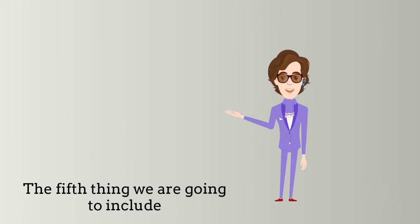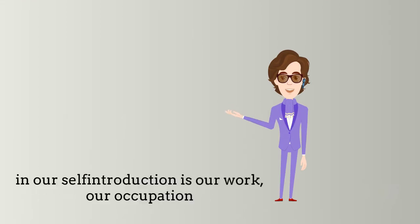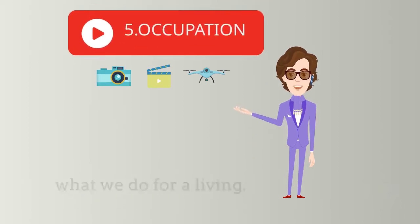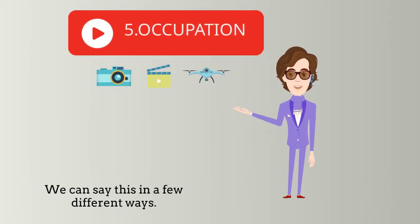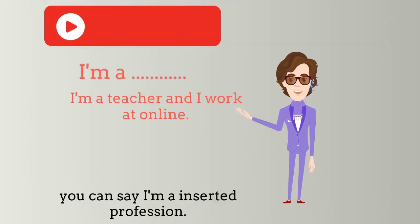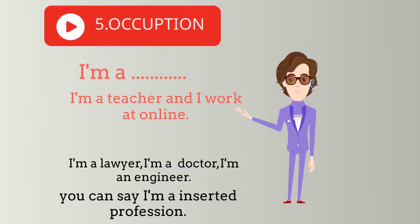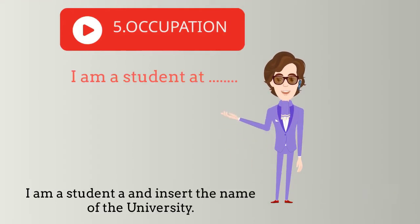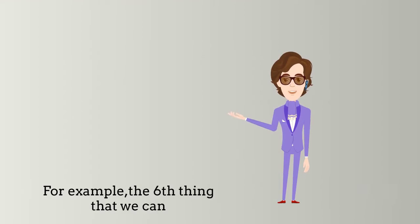The fifth thing we are going to include in our self-introduction is our work — our occupation, what we do for a living. We can say this in a few different ways: 'I'm a [profession]' — for example, 'I am a lawyer', 'I'm a doctor', 'I'm an engineer'. If you are still studying, you can say 'I am a student' and insert the name of the university.